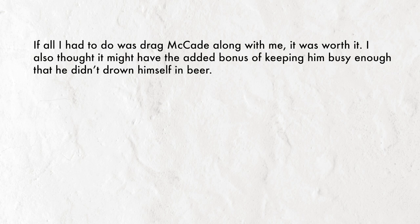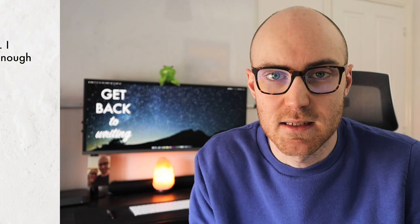To provide an example of a bad scene transition, here's one from an early novel I wrote. The scene ends: 'If all I had to do was drag McCade along with me it was worth it - I also thought it might have the added bonus of keeping him busy enough that he didn't drown himself in beer.' Fine. So the scene's about to change. How did I transition? 'A few days later we were driving to get something for lunch.' By now you've probably heard of 'show don't tell.' Saying time has passed is a really amateur way of moving between scenes - it feels clunky and it's not interested in keeping the reader with us. It's amateurish, like a bad film cut. We haven't helped the reader over the chasm; we've left them to their own devices.